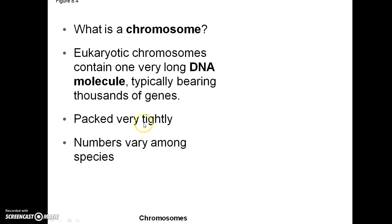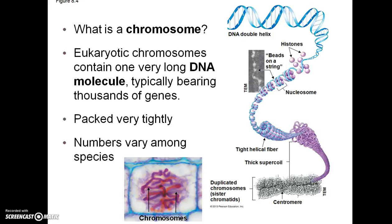This genetic information is packed very tightly within a chromosome, and the number of chromosomes varies among species. Here we have the DNA double helix with histones, which are special proteins — it kind of looks like beads on a string. One bundle is called a nucleosome. This DNA strand along with the histones are packed into tight helical fibers. This section here would be referred to as a thick supercoil. The centromere is where those two copies of a chromosome are going to be joined — so this would be a duplicated chromosome, and each side would be a sister chromatid.